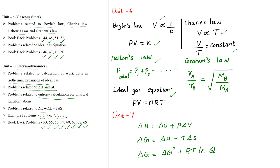The most important formulas are: ΔH = ΔU + PΔV; ΔG = ΔH − TΔS; and ΔG = ΔG⁰ + RT ln Q. These formulas are useful and should be learned well.